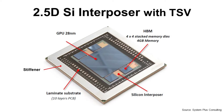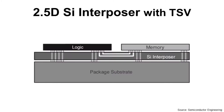Those dies can be multiple logic dies or a logic die plus a memory die. For logic dies, it can be FPGA dies, GPU dies, or network dies. This is the simplified structure of 2.5D to explain the function of the silicon interposer. As you can see, there are electrical interconnections on top of the silicon interposer to connect the logic die and memory die.